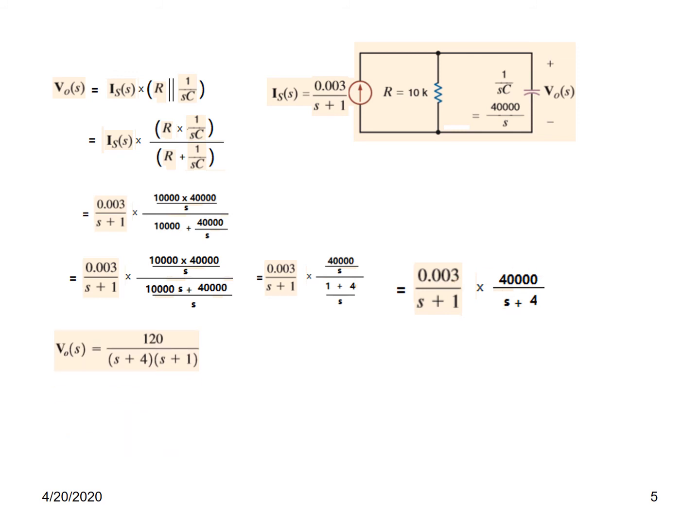Multiplying by the source current we get 120 at the numerator, giving V0(S) = 120 divided by (S + 4)(S + 1). Since there are two factorial terms in the denominator, we have to use partial fractions, and we can write it as A over (S + 4) plus B over (S + 1). These are the two unknowns we need to find.